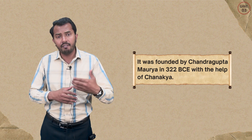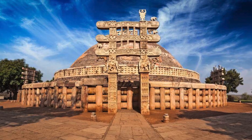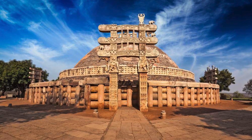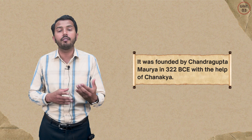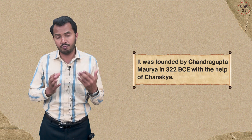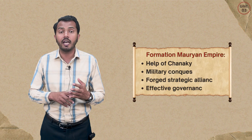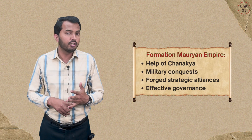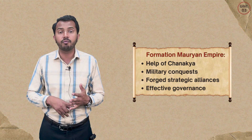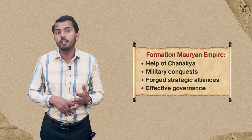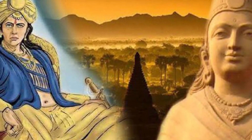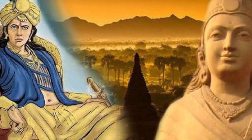Now we will have a brief overview of what factors were actually responsible for the formation of this empire. The first factor was the help of Kotaliyah Chanakya — without him, it would not have been possible for Chandragupta Maurya to establish a new dynasty. The second factor was his military conquest.